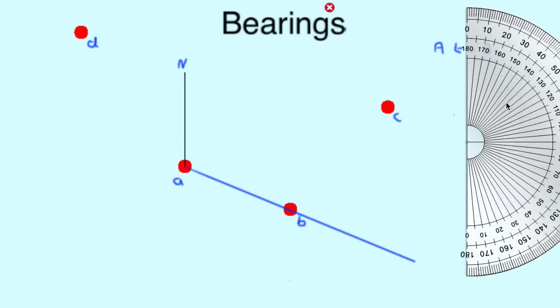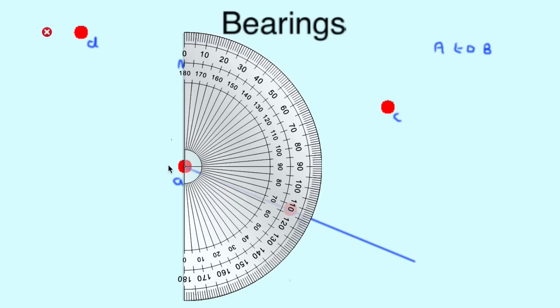Now, we're measuring this angle here, so let's grab our protractor. Line the origin of the middle point, and ensure our 0 line is in line with our north line we marked earlier. Counting round, we see the line crosses our protractor at 113 degrees. Since that is our three-digit requirement, we can simply write 113 as our answer.